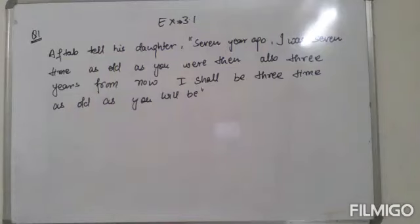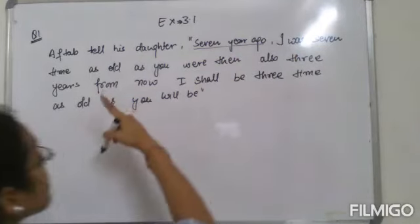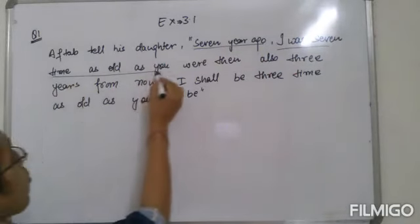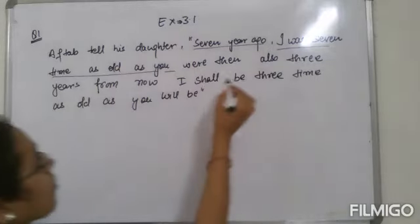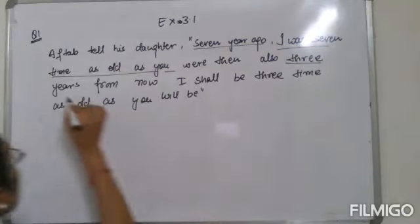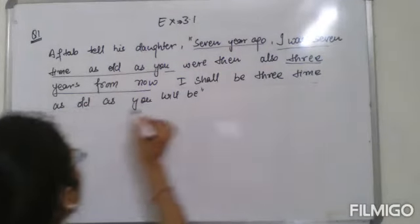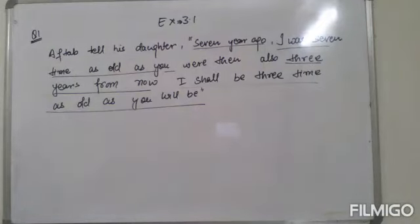Let's see the first question in section 3.1. The problem states: a father tells his daughter that 7 years ago, he was 7 times as old as she was. And also, 3 years from now, he shall be 3 times as old as she will be.